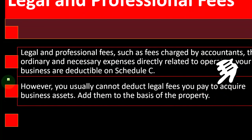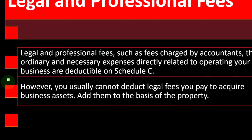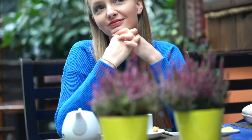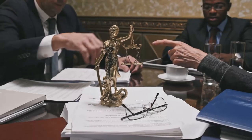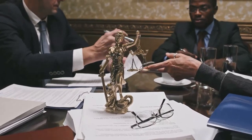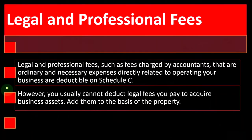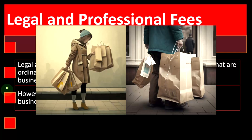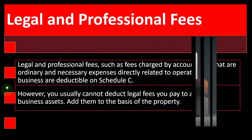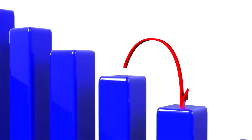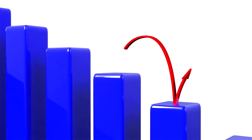You usually cannot deduct legal fees you pay to acquire business assets — instead, add them to the basis of the property. For example, if you bought a building and had to pay a lawyer or professional to go through the purchasing process, the question is whether you get to expense it immediately or whether you must include it in the cost of the building and potentially get the benefit through depreciation, if it's a depreciable asset, as opposed to land, which isn't depreciable.